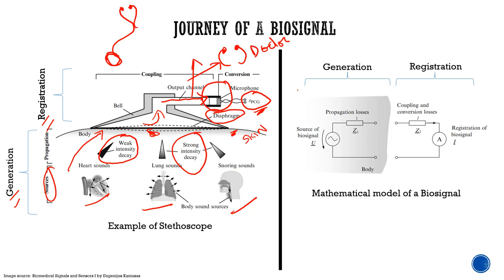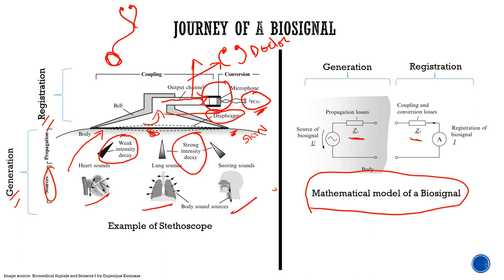As a biomedical engineer, everything must be explained through a model. We have a mathematical model: the propagation losses are represented by resistance Z1, and coupling and conversion losses are depicted by Z2. The source of the biosignal experiences these propagation losses and coupling/conversion losses before it can be registered in the machine. This whole journey of the biosignal is very important for any signal to be recorded and interpreted by the physician.